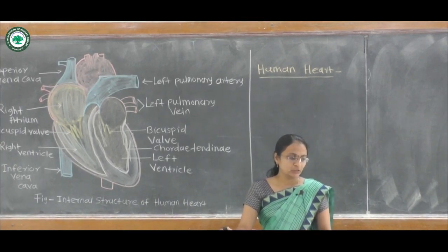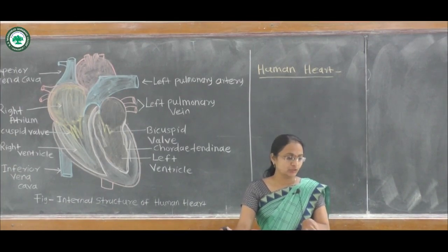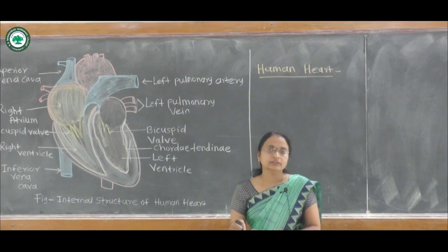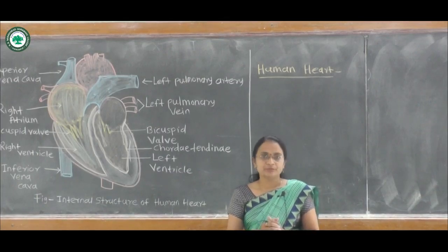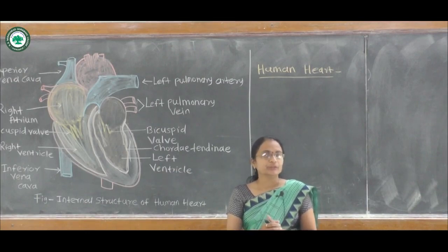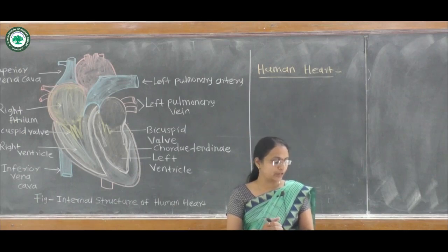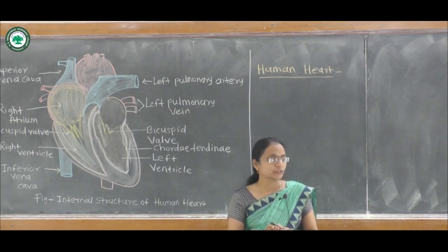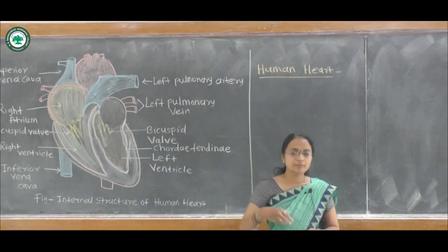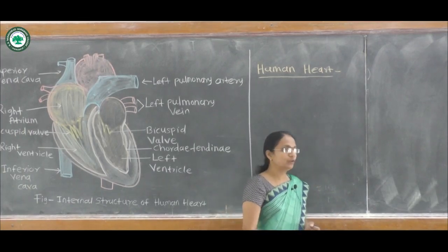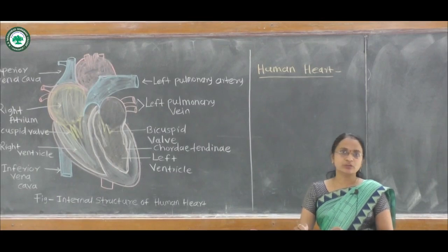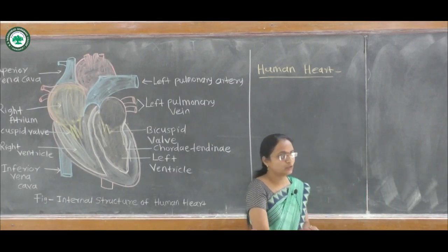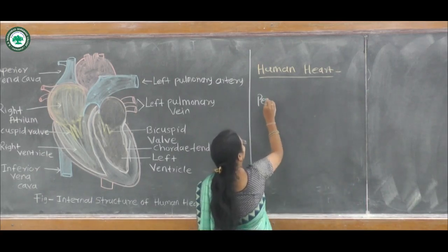The human heart is located in the thoracic cage. It is a reddish-brown organ which is hollow and muscular, weighing on average 250 to 300 grams, varying from female to male. Three-fourths of it is located on the left side of the body and one-fourth on the right side. The heart is well protected in the thoracic cage and is also enclosed in a membrane known as the pericardium.